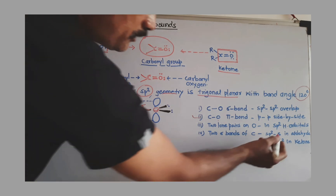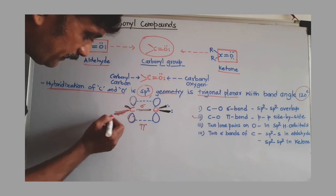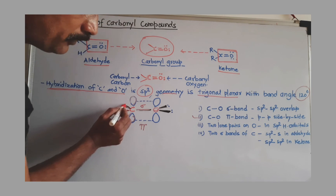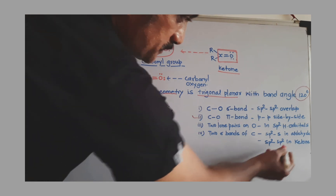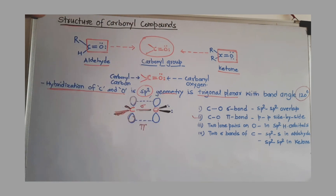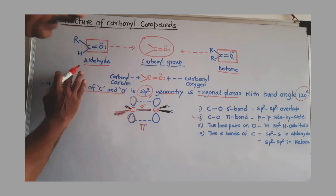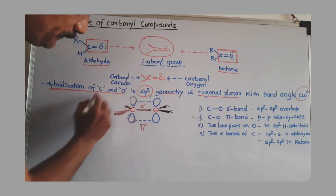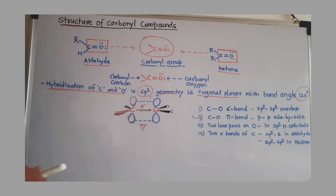If there is an aldehyde, then one sp2 hybrid orbital of carbon overlaps with the s orbital of hydrogen, giving a C-H bond. Another sigma bond is formed after sp2-sp2 overlapping of the carbonyl carbon with another carbon. In this way we can discuss the structure of carbonyl compounds.